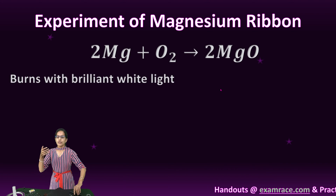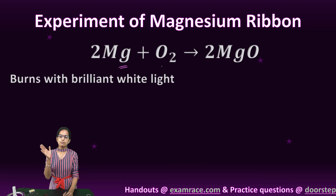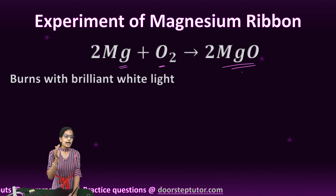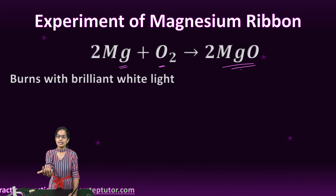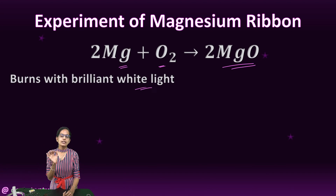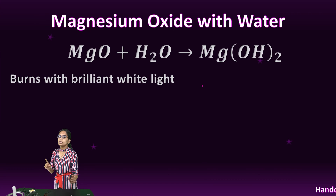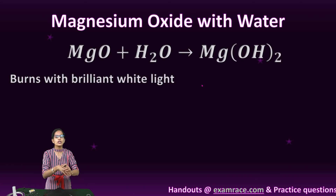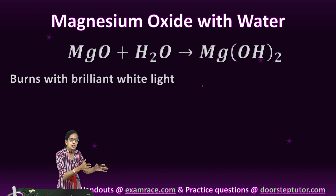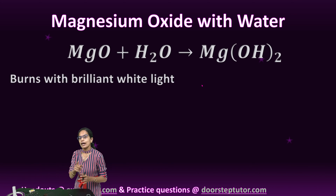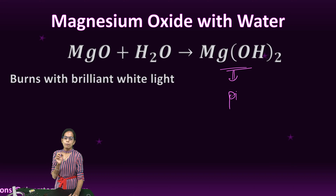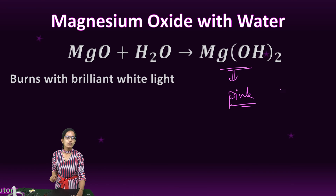In the experiment: magnesium combines with oxygen from the air to form magnesium oxide. Don't visualize this directly — it burns with a brilliant white light. This forms magnesium oxide, which is a chemical change. When magnesium oxide reacts with water, it forms magnesium hydroxide. Magnesium hydroxide is a basic solution and would turn pink in the presence of phenolphthalein.